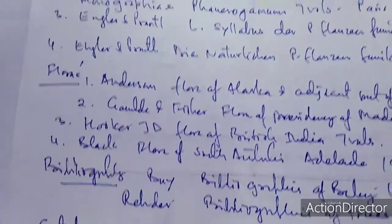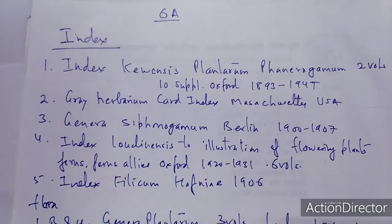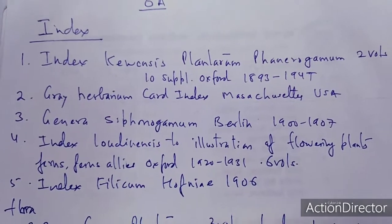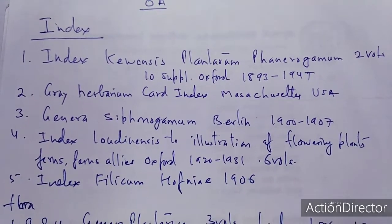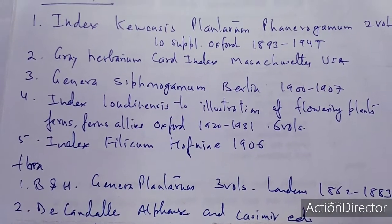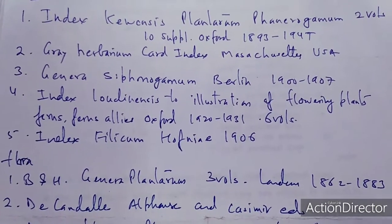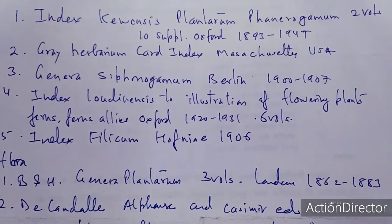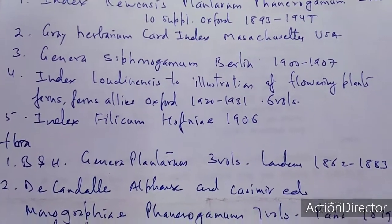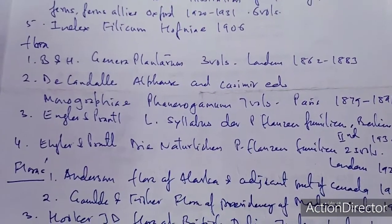Further literature includes Index Kewensis Plantarum Phanerogamarum, Gray Herbarium card index Massachusetts, Genera Phanerogamarum by Bentham and Hooker, Index Loudness — listing of flowering plants, ferns, and families, Oxford Index Filicum, and Bentham and Hooker's Genera Plantarum, as well as De Candolle, Alphonse and Casimir, Engler and Prantl, Die Natürlichen Pflanzenfamilien.